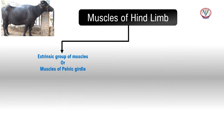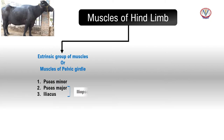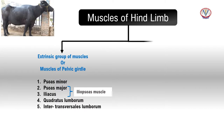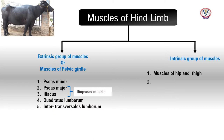Muscles of the pelvic girdle, or sublumbar muscles, or extrinsic musculature of the pelvic limb include psoas minor, psoas major, and iliacus. Iliacus and psoas major combine forming the iliopsoas muscle in the case of cattle, quadratus lumborum, and intertransversalis lumborum. The intrinsic muscles of the pelvic limb can be divided into the muscles of the hip and thigh region and the muscles of the leg and crus region.